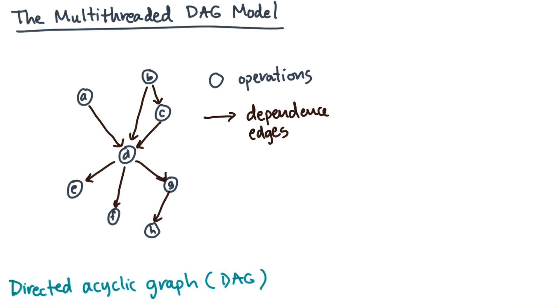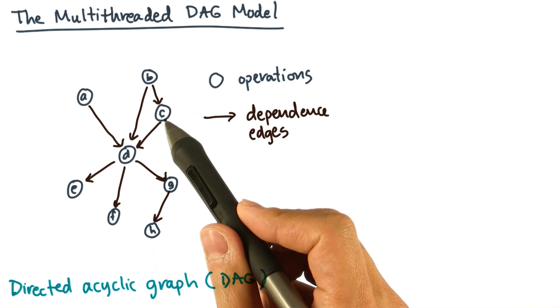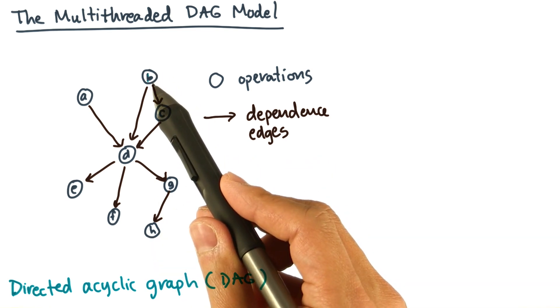The directed edges show you how operations depend on one another, where the sinks depend on the sources. So this would be a sink, and this would be a source, and this would say that C depends on the output or result of B.